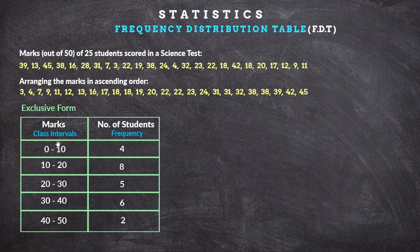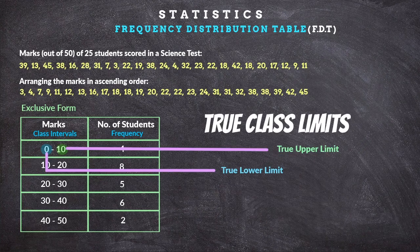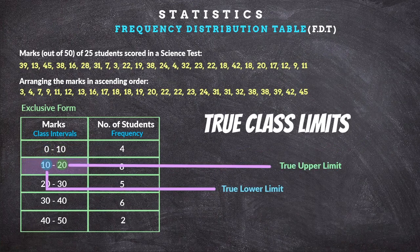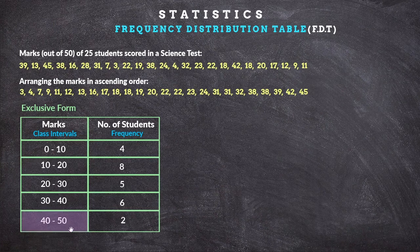The class intervals in the table are not always the same. When we call true class limits, the true lower limit is number one and the true upper limit is number one. In the class interval, the true lower limit is 0 and the true upper limit is 10. The next class interval has a true lower limit of 10 and a true upper limit of 20.